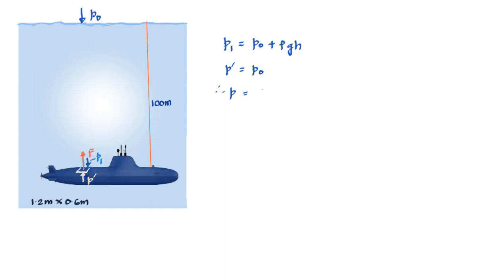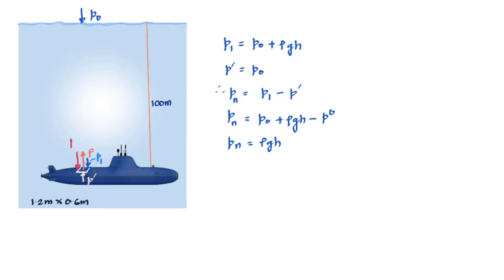The net pressure p_n equals p1 minus p_dash — the pressure acting from inside the submarine. So p_n = p₀ + ρgh − p₀, which simplifies to p_n = ρgh. Therefore, the force required to counter this net pressure equals p_n multiplied by the area of the hatch.